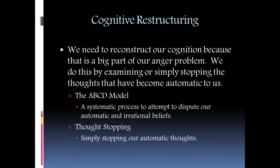Cognitive restructuring: we need to reconstruct our cognition because that is a big part of our anger problem. We do this by examining or simply stopping the thoughts that have become automatic to us. The ABCD model is a systematic process to attempt to dispute our automatic and irrational beliefs. We've also talked about thought stopping — simply stopping our automatic thoughts — and again, the best way is to use distraction as a thought-stopping technique.